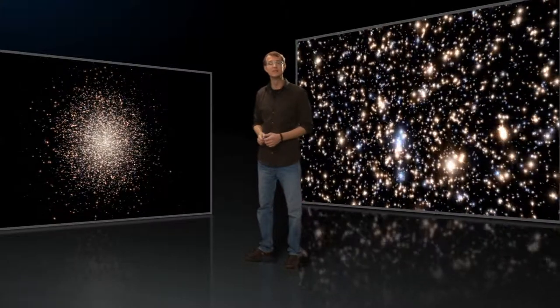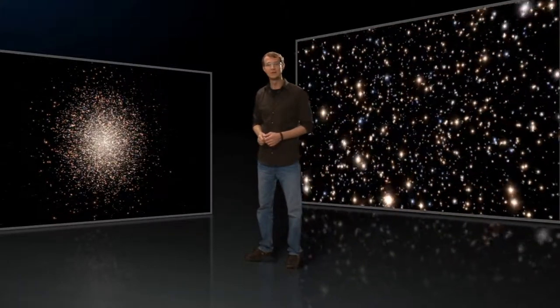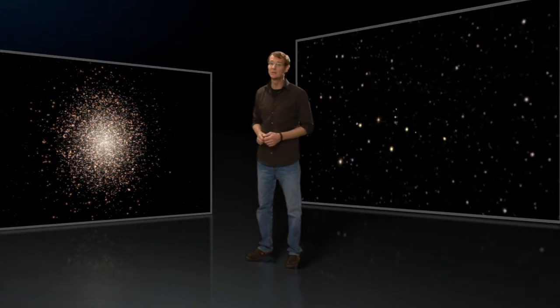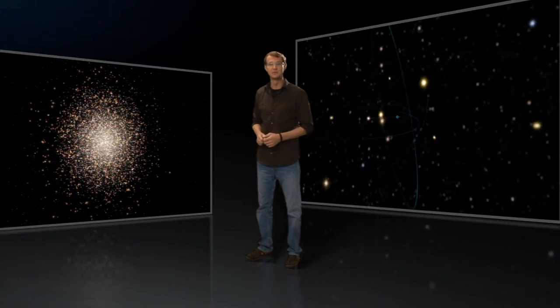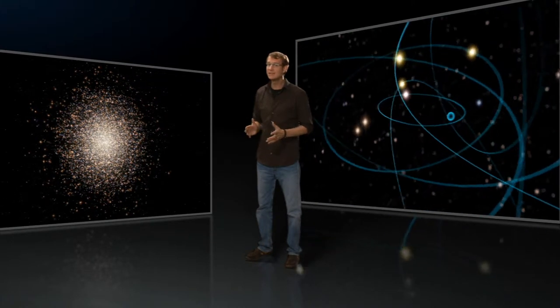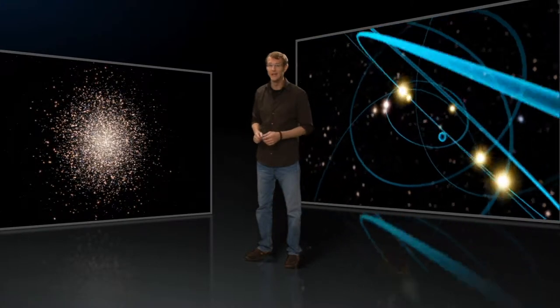Now, new images obtained with the Advanced Camera for Surveys on board the NASA-ESA Hubble Space Telescope and data obtained with the GMOS spectrograph at the Gemini Observatory show that Omega Centauri appears to be harboring an elusive intermediate-mass black hole at its center.